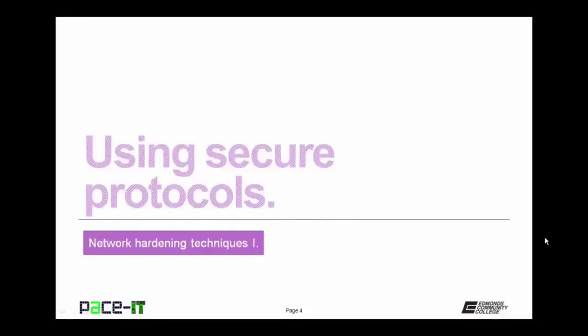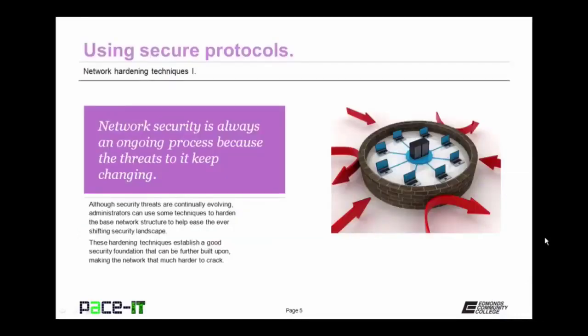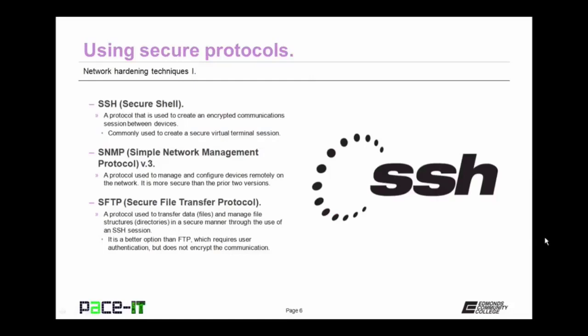I'm going to begin by talking about using secure protocols. Network security is always an ongoing process because the threats to it keep changing. Although security threats are continually evolving, administrators can use some techniques to harden the base network structure to help ease the ever-shifting security landscape. These hardening techniques establish a good security foundation that can be further built upon, making the network that much harder to crack. One of these hardening techniques is to use secure protocols whenever possible.